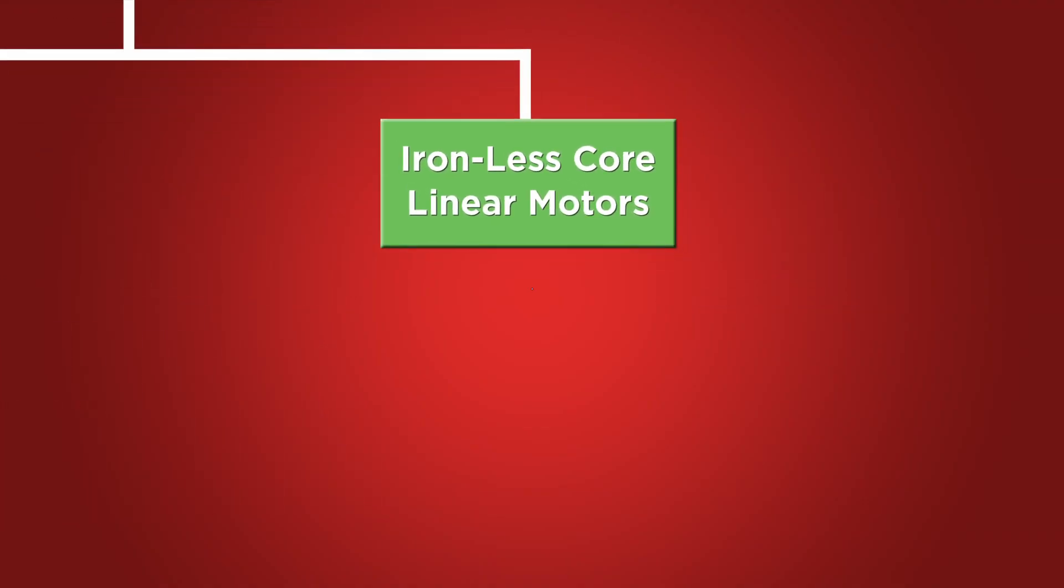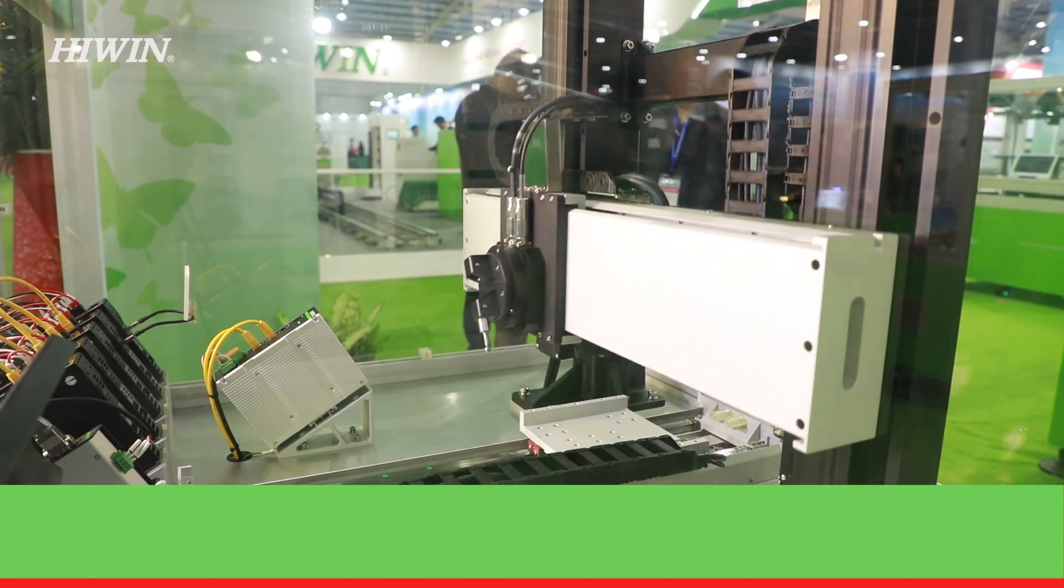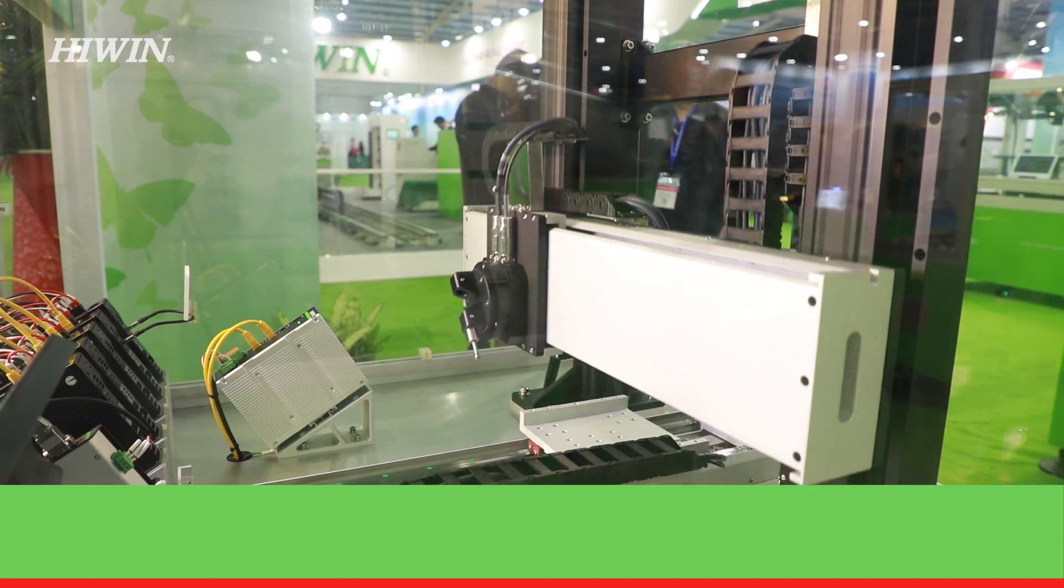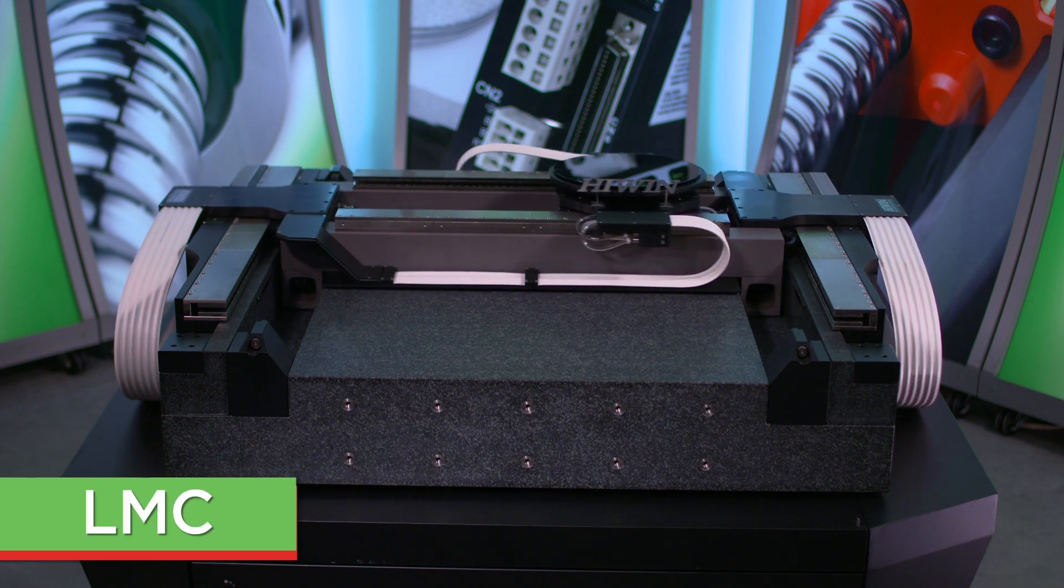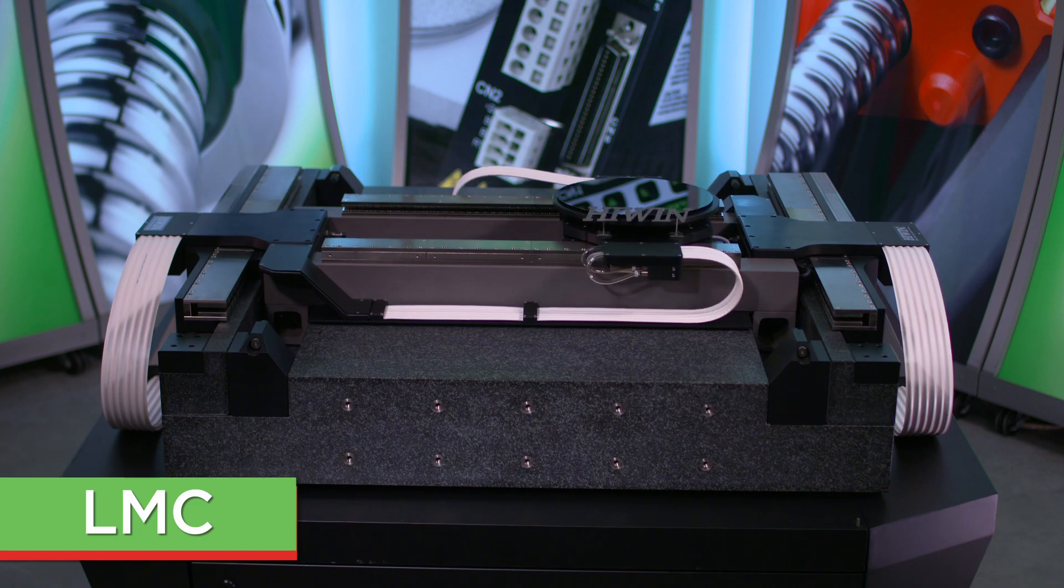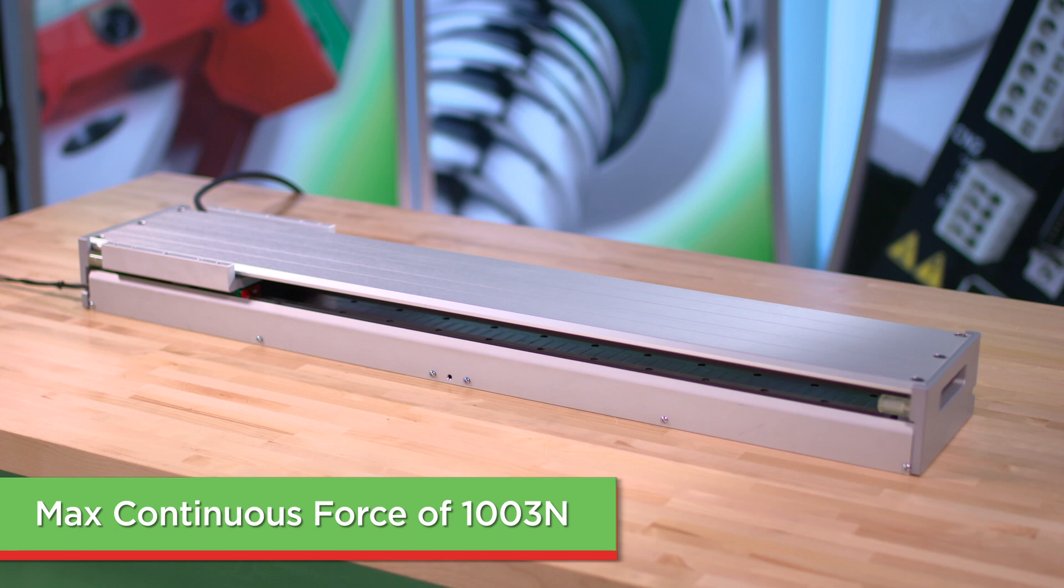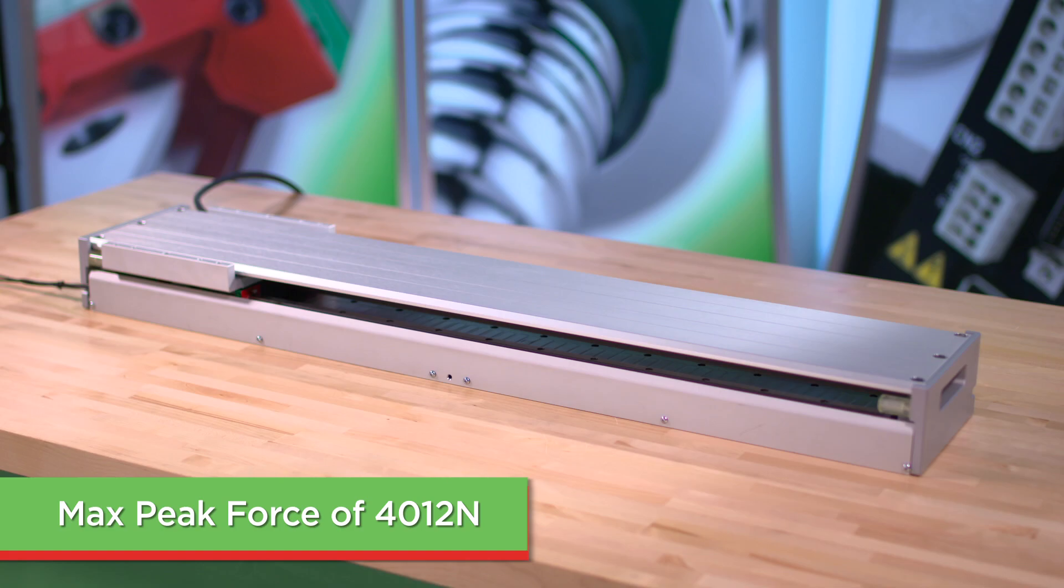Hiwin's ironless motors are most useful in scanning applications due to their low velocity ripple and zero cogging. The LMC is a U-shaped motor that has an excellent dynamic response time, low inertia, and high acceleration. Hiwin's full LMC series has a max continuous force of 1003 newtons and a max peak force of 4012 newtons.